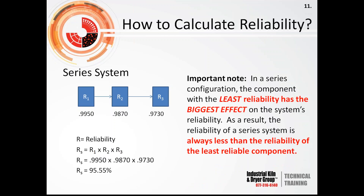In a series configuration, the component with the least reliability has the biggest effect on the system's overall reliability. As a result, the reliability of a series system is always less than the reliability of the least reliable component. When doing repairs or looking at a series system, you want to focus on that least reliable component to make the biggest improvement.